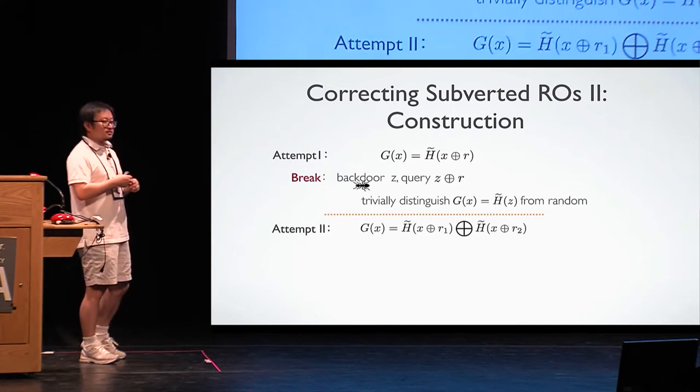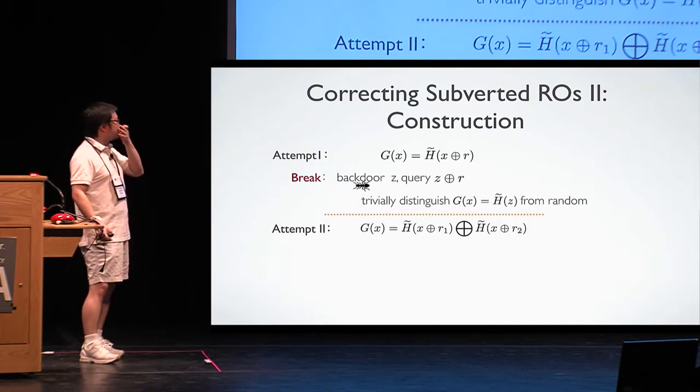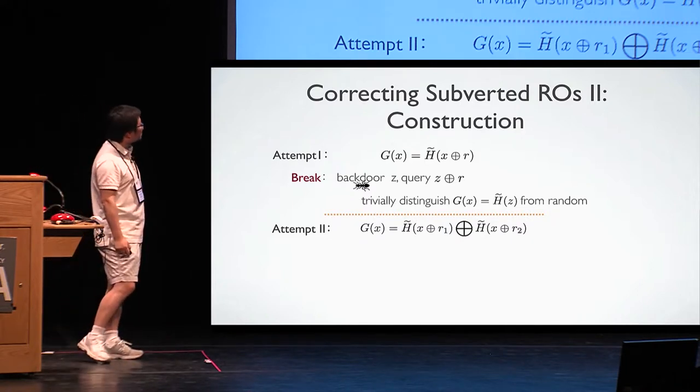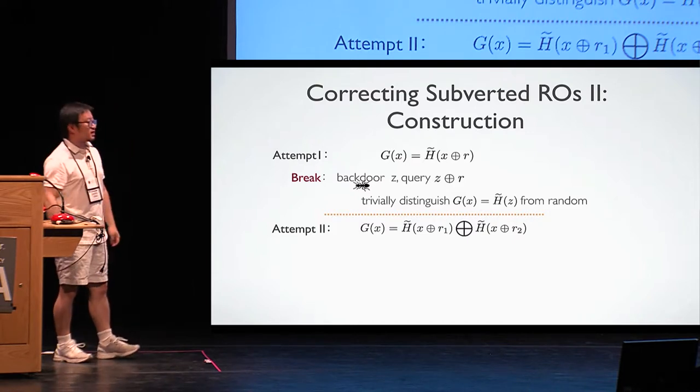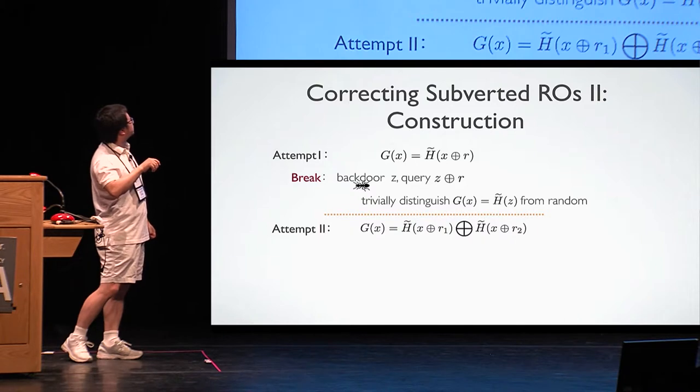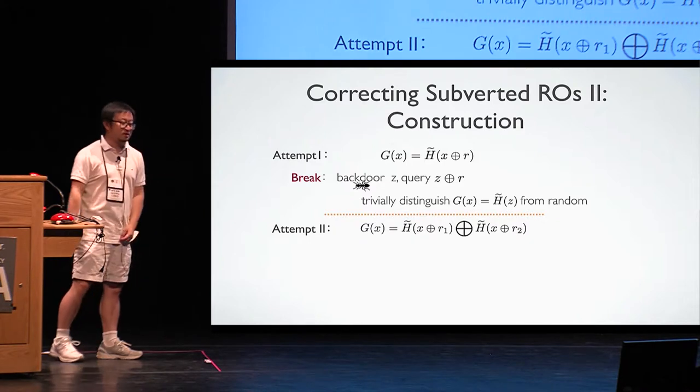So it's very easy, he can trivially distinguish from this point. Let's try something slightly more complicated. Well, just shifting input might not be good. How about we also shift output? We also mix several items of the output. Now it seems the immediate attack won't be helpful, because even if the adversary finds the backdoor here, it's going to be shifted to some other places. Intuitively, it seems good.